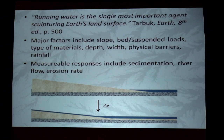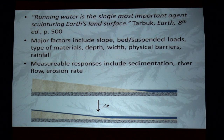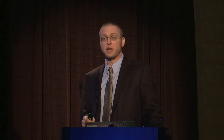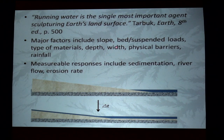This concept of base level — reading through basic geology textbooks written by Tarbuck, for an introductory geology course — over and over he says: running water is the single most important agent sculpting the Earth's land surface. That is a constant mantra of current geology. They have come up with hypotheses as to how water erodes, with models validated by experimental research. The major factors include slope, bed, suspended loads, types of materials, depth, width, physical barriers, and rainfall — all of which can be measured and modeled.